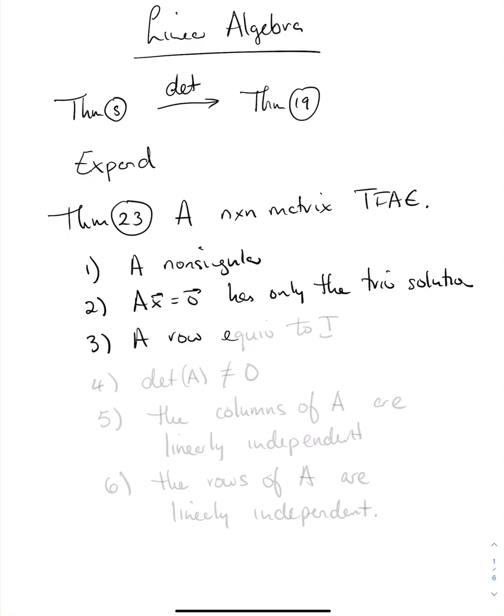4. The determinant of A is not zero. 5. The columns of A are linearly independent. 6. The rows of A are linearly independent.